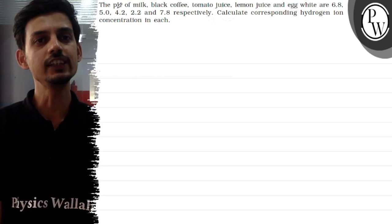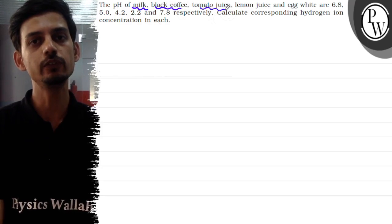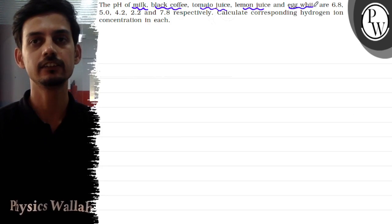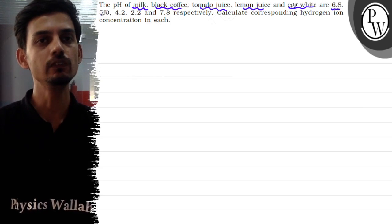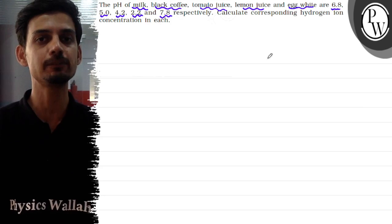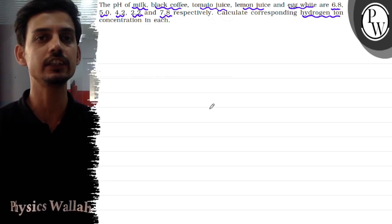Hello, the question says the pH of milk, black coffee, tomato juice, lemon juice, and egg white are 6.8, 5.0, 4.2, 2.2, and 7.8 respectively. Calculate corresponding hydrogen ion concentration in each.